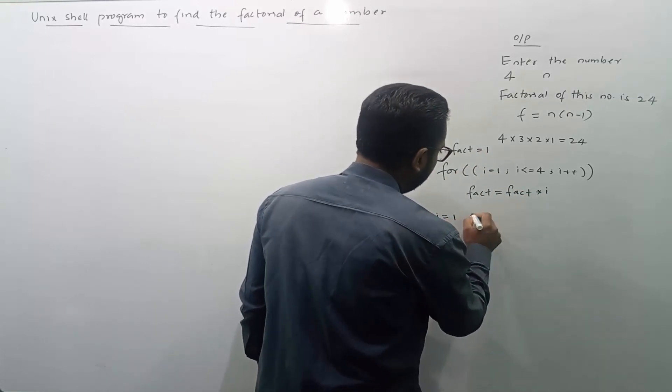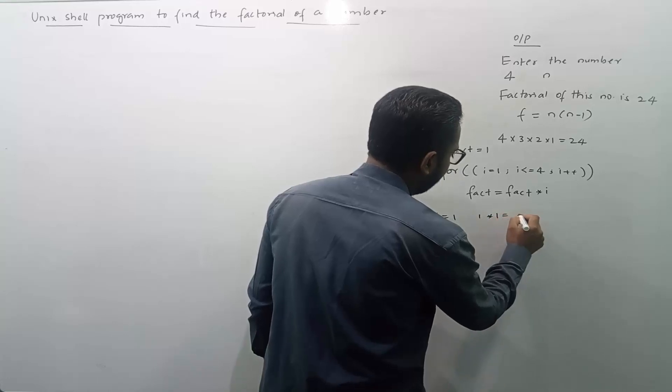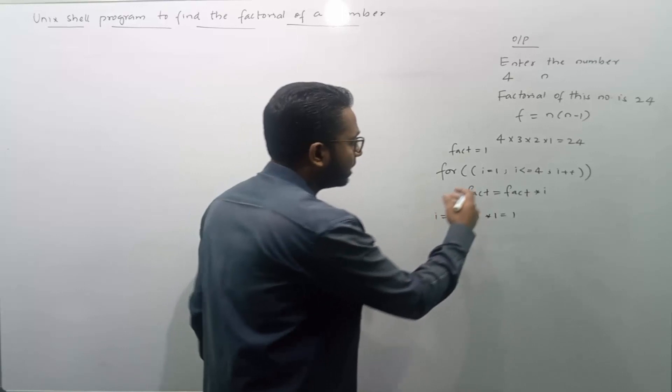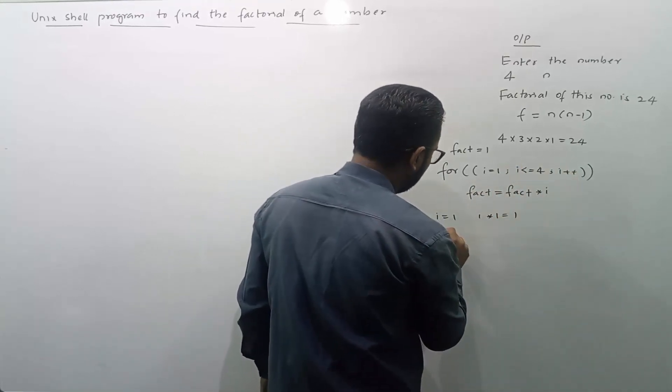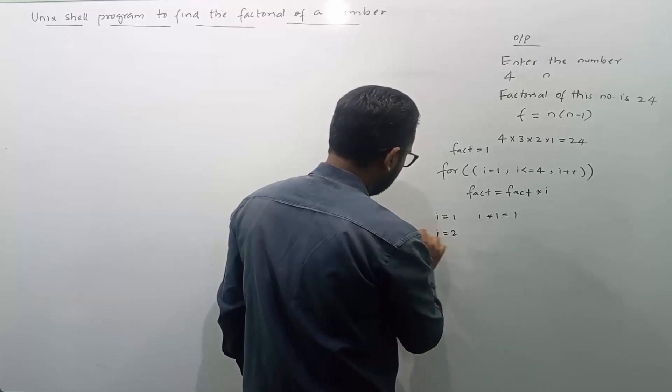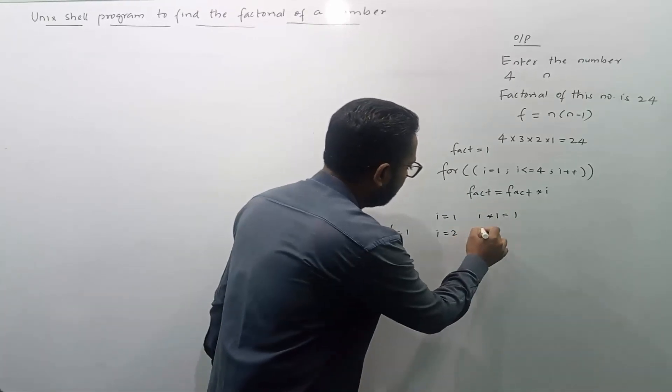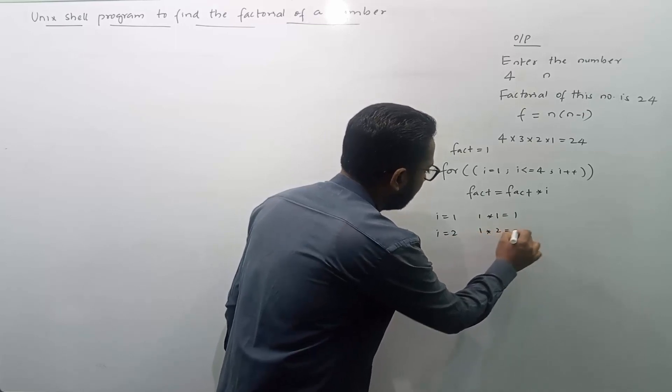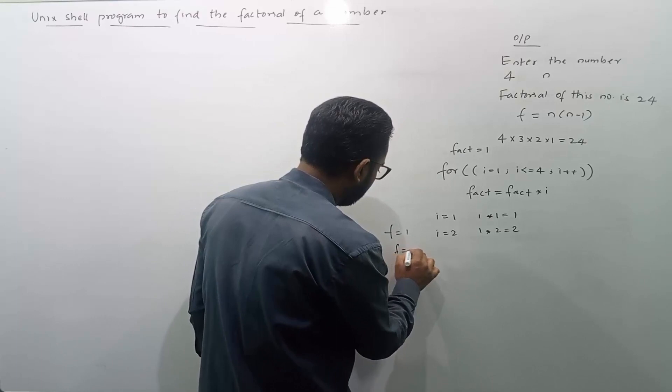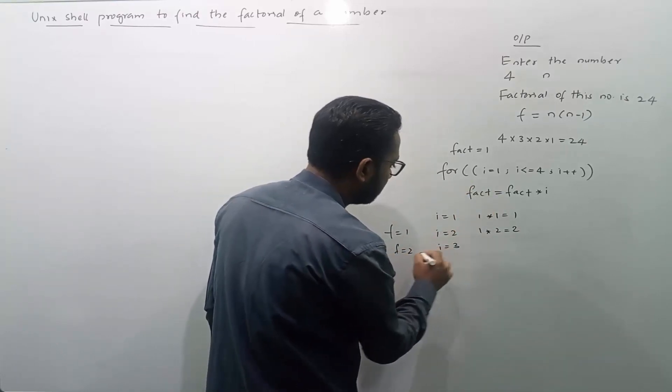i value 1, fact value is 1, 1 into 1 and I will get 1 as an output. Next time i gets incremented, i becomes 2. And fact is 1. So now fact is 1, 1 into 2 and I will get 2. Now fact becomes 2 and i gets incremented by 1. Now i becomes 3.